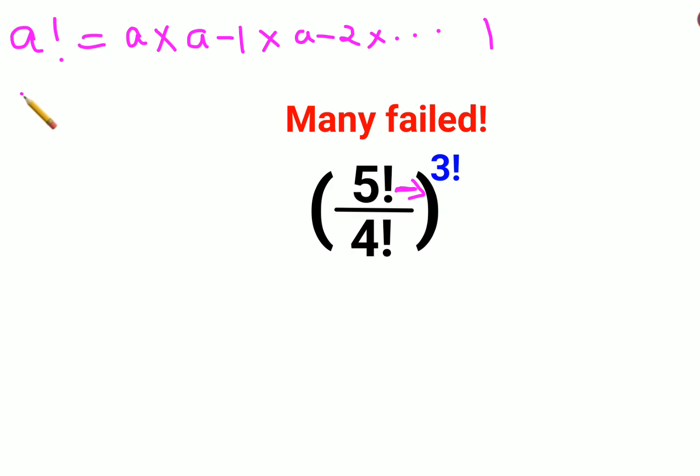5 factorial can be written as 5 into 4 into 3 into 2 into 1. Similarly, 4 factorial can be written as 4 into 3 into 2 into 1.